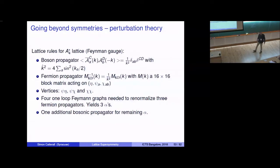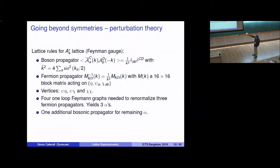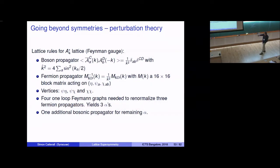Going beyond symmetries requires explicit perturbation theory. A one-loop calculation was performed using lattice perturbation theory in appropriate gauge. There are propagators for A, A-bar fields and a fermion propagator related to the inverse Kähler-Dirac operator. Vertices involve couplings of psi, eta, psi, chi, and chi chi. Four one-loop Feynman graphs determine the three fermion propagator self-energies (yielding three of the four alphas) and one bosonic propagator gives the final alpha.